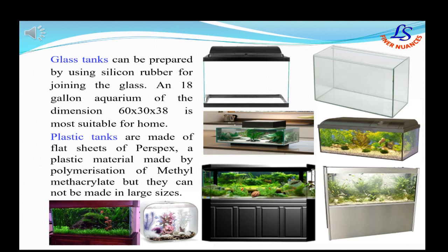As you can see here, we have shown you various aquariums. Glass tanks can be prepared by using silicon rubber which is needed for joining the glass. The most proper dimensions would be 60 by 30 by 38. Plastic tanks are made up of flat sheets of perspex — plastic material made by polymerization of methyl methacrylate can also be used.